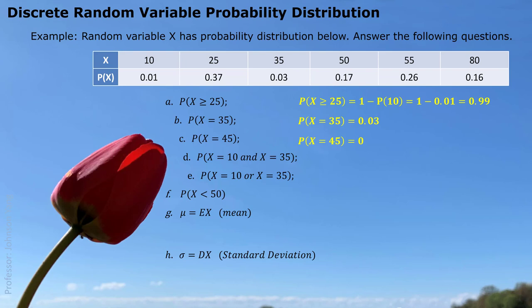That is the basic understanding about probability distribution. Part D: probability x equals 10 and x equals 35. Both 10 and 35 are listed in the table, but they cannot happen together — they are mutually exclusive. So the probability of x equals 10 and x equals 35 together is 0. Part E: probability x equals 10 or x equals 35. We have both probabilities 1% and 3%, and since 'or' is inclusive of both situations, we simply add them together to get 4%.